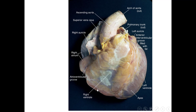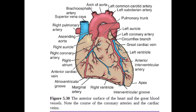The surface shown in this diagram is the sternocostal surface, also called the anterior surface of the heart. We will discuss how many surfaces and how many borders there are. The anterior surface is called the sternocostal surface because it is related to the sternum and the ribs.